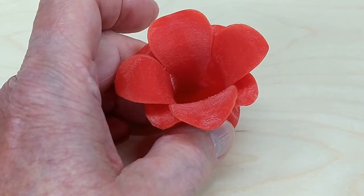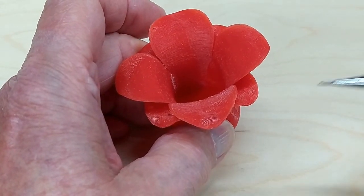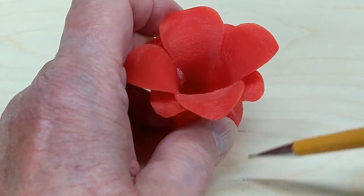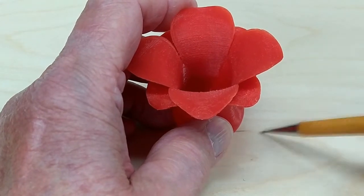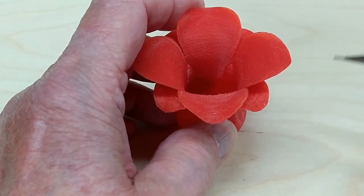You can print the flower on the bed of your printer just like this, but then you will have support material that will go from each of these petals all the way down to the bed.